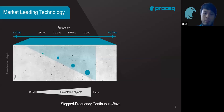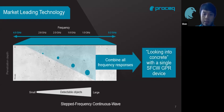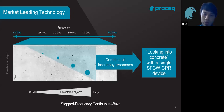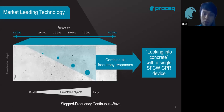What sets our GPR apart from others in the market is our use of ultra-wide band technology, which we call step frequency. A low-frequency GPR can penetrate far and detect deep objects, but you don't get good resolution near the surface. A high-frequency GPR gives very good resolution near the surface, but you lose out on depth penetration. Previously, users needing both near-surface and deep detection had to buy two GPRs. With our ultra-wide band technology, one GPR gives you excellent near-surface resolution without sacrificing depth penetration.